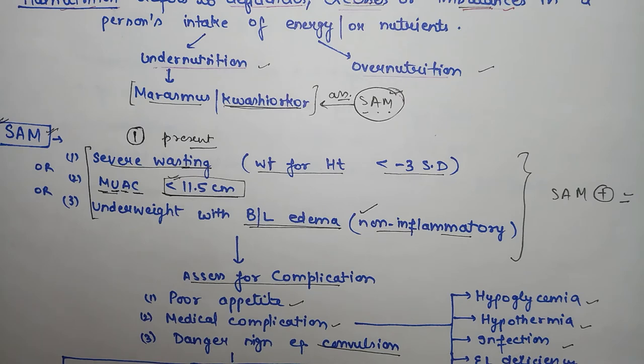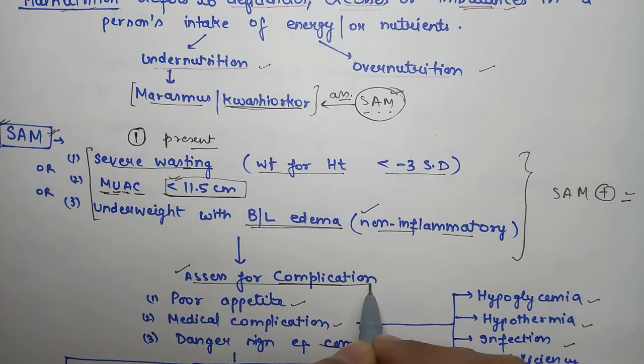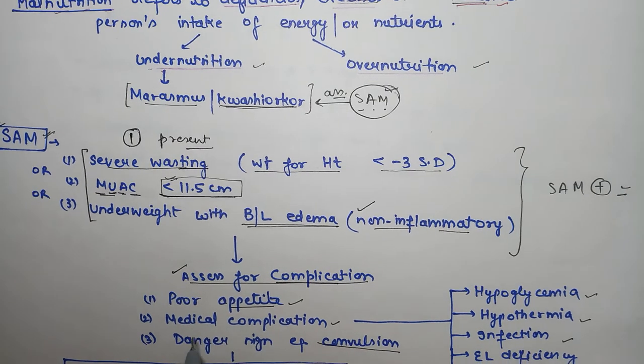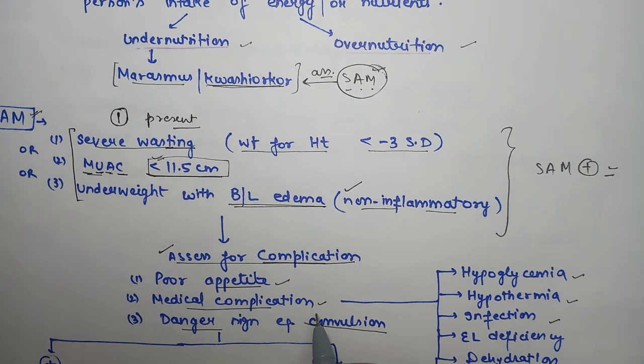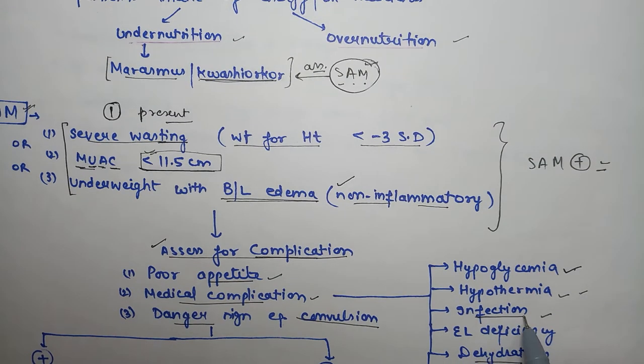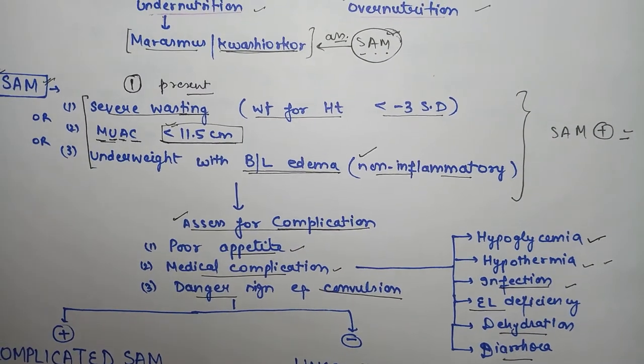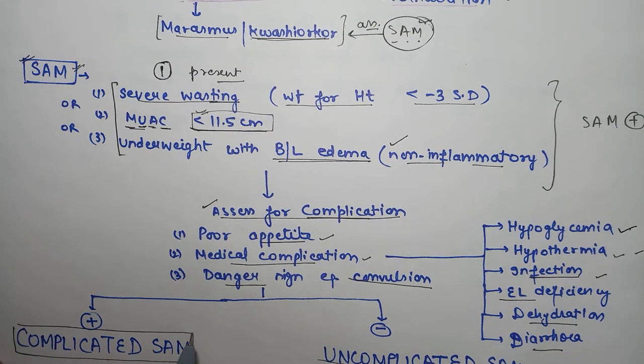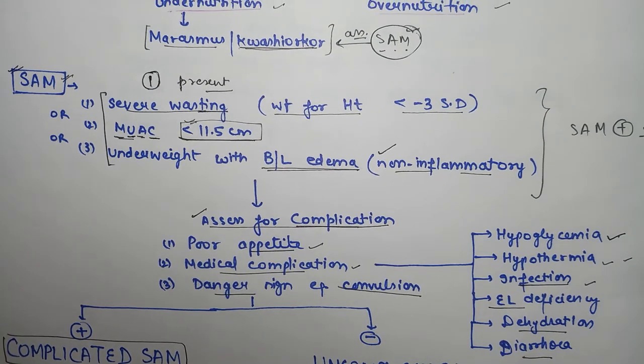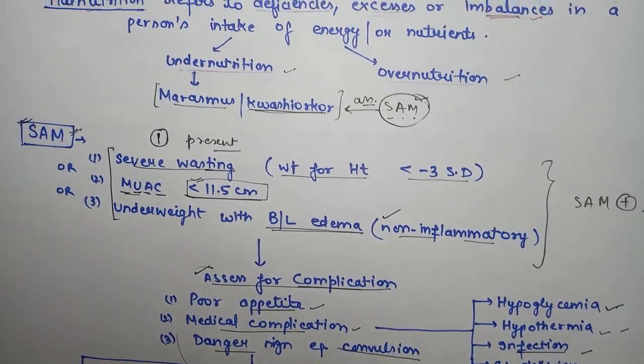If a child meets SAM definition, we assess complications. Complications can be poor appetite, medical complications, or danger signs like convulsions. Medical complications include hypoglycemia, hypothermia, infection, electrolyte deficiency, dehydration, and diarrhea. If complications are present, it's complicated SAM. If none are present, it's uncomplicated SAM. We make this classification because treatment differs.